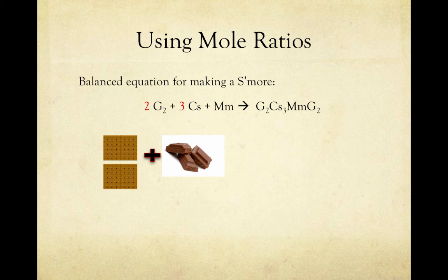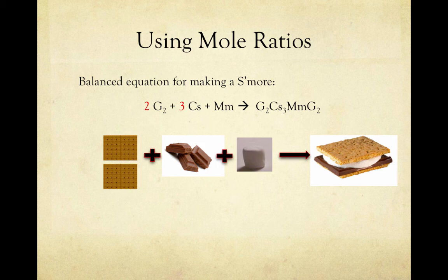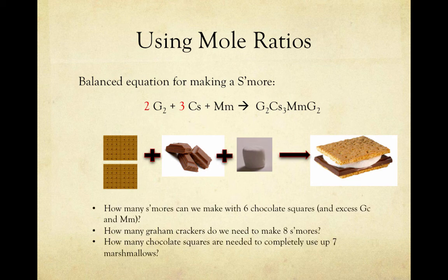You need three chocolate squares, and you need one marshmallow to yield one delicious s'more. So here our ratio is two G2s to three CSs, and one MM to yield one s'more. Consider the questions below. How many s'mores can we make with six chocolate squares? And assuming excess graham crackers and marshmallows. Well since it takes three chocolate squares to make one s'more, we can make two s'mores with six chocolate squares, and excess graham crackers and marshmallows.